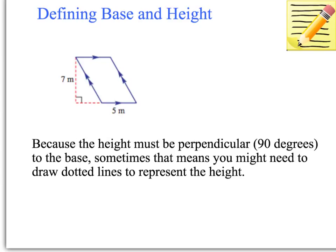Just to go over that again, when we're defining base and height, it is perpendicular, so 90 degrees to the base. Now sometimes that means you might need to draw the lines outside of the shape, like we do with a triangle. It's because it needs to be perpendicular to the base.